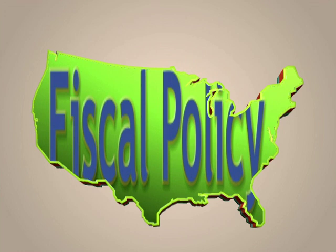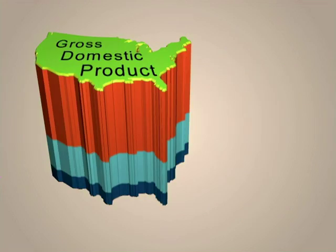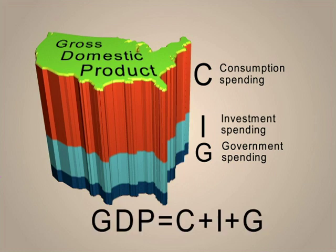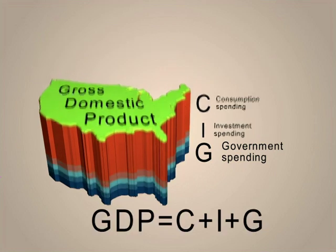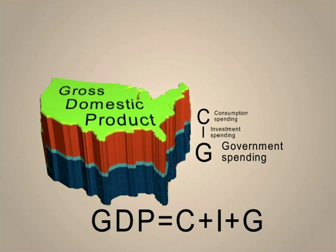This video focuses on that part of macroeconomics known as fiscal policy — the idea that when people don't spend enough, the government should spend. It can be spelled out this way: economic output, or gross domestic product, is made up of consumption spending, plus investment spending, plus government spending. Since in the Depression, C and I were down to a trickle, G — government — had to spend instead.